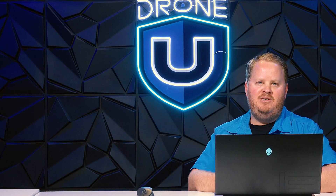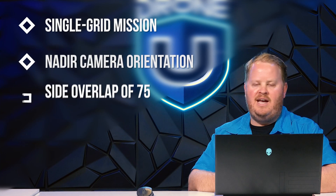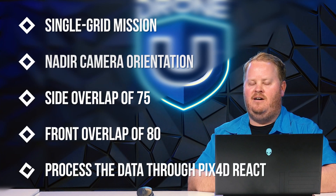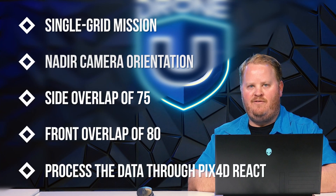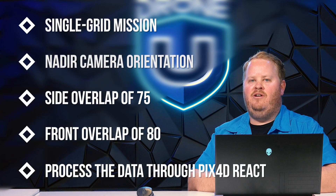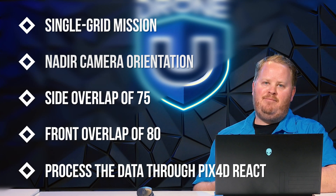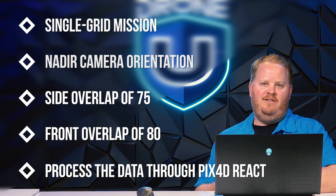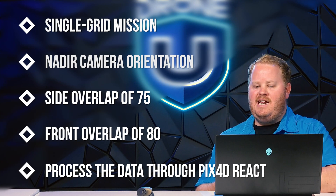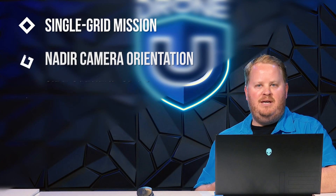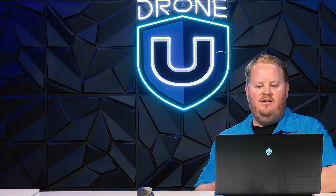To fly this mission, you would simply run a single grid with any drone that has autonomous mapping software. You're going to run your camera at nadir, with a side lap of 75 and a front lap of 80, then just import the data right into Pix4D React, run the data, and go ahead and make your annotations and gather your measurements. It really is that simple.